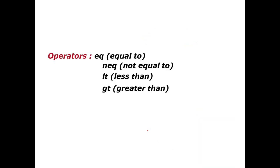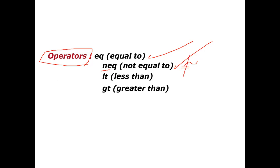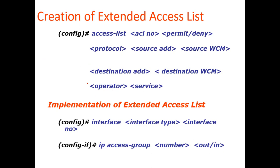There are certain operators used when working with ACL. The first is 'eq' meaning equal to; 'neq' meaning not equal to; 'lt' meaning less than; and 'gt' meaning greater than. So you have four options: equal, not equal, less than, or greater than.